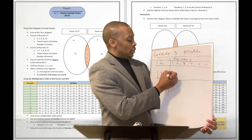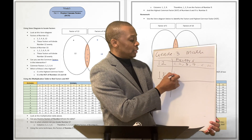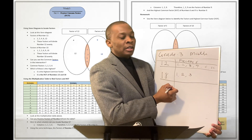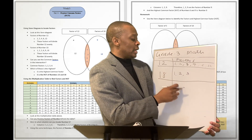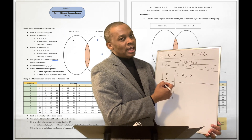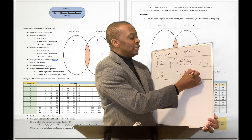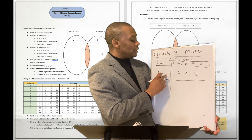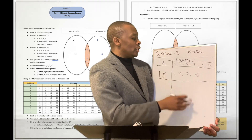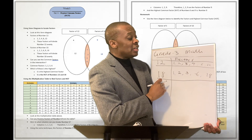Now let's look at number 18. Number 1 is definitely a factor of 18 because 18 divided by 1 is 18. Number 2 is another factor. Number 3 is another factor — 18 divided by 2 gives you 9, and 18 divided by 3 gives you 6. What about 4? No — 18 divided by 4 does not give an even division, so 4 is not a factor. What about 6? Yes — 18 divided by 6 gives you 3. What about 12? No, 12 does not divide 18 evenly. But 18 itself divides 18 evenly, so 18 is a factor.